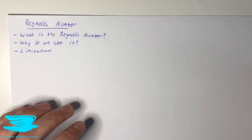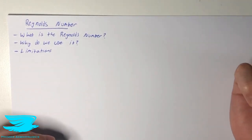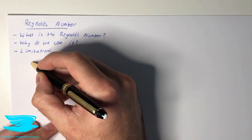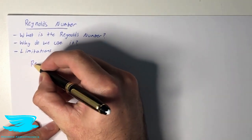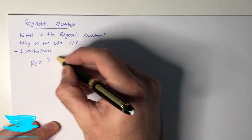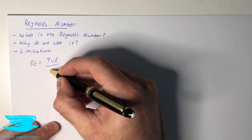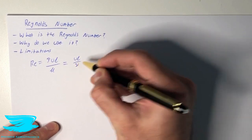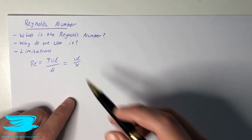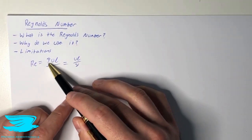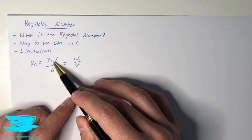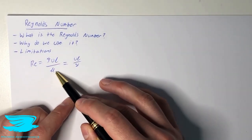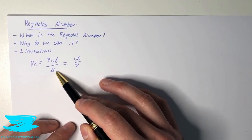First up, what is the Reynolds number? The Reynolds number is something called a non-dimensional number, and the equation is quite simple. I'm going to write the equation first because it will help us understand a little bit easier what it is. We have two forms. The first form is the density, rho, times the velocity, u, times the length scale, L, divided by the dynamic viscosity, mu.